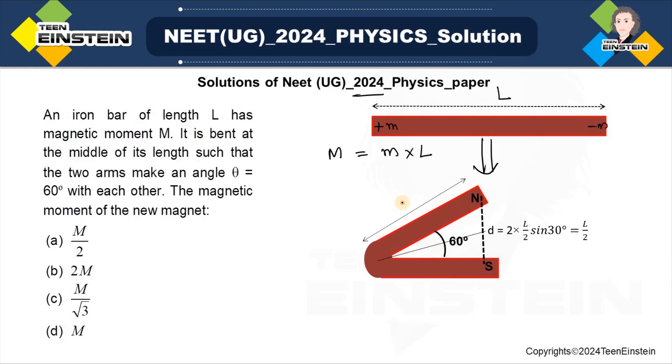See, this is the representative figure I have drawn here, and you can see the angle between them is 60 degrees. Now, we have to find out what is the new magnetic dipole moment for this magnet. Okay.